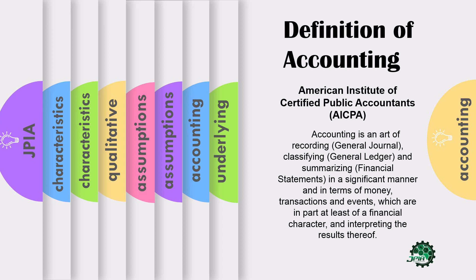First is recording, which involves writing down or keeping records of business transactions using the general journal. Next is classifying, which includes grouping similar items that have been recorded with the use of the general ledger. Then, once they are classified, information is to be summarized into reports, which we call financial statements.